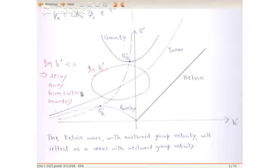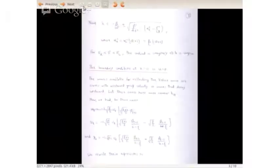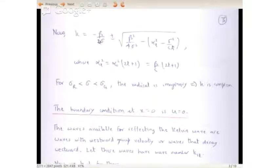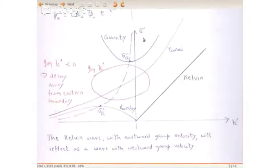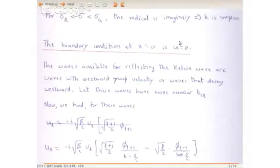The Kelvin wave with eastward group velocity will have to reflect as a wave with westward group velocity, because that is the only thing that can take energy back. What happens when the Kelvin wave is incident on an eastern ocean boundary? K equals minus beta over 2 sigma, plus or minus the square root of beta-squared over 4 sigma-squared minus alpha_l-squared minus sigma-squared over c_n-squared, where alpha_l-squared equals beta over c times (2l+1). For sigma_r less than sigma less than sigma_g, these are the points where the Yanai wave curve and Rossby wave curve intersect the line K equals minus beta over 2 sigma.